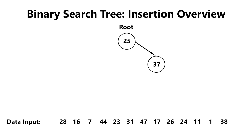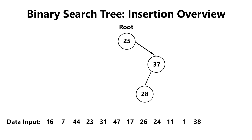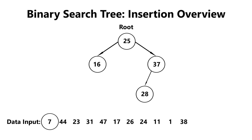In this case, we insert right since 37 is greater than 25. Now let's insert 28. 28 is greater than 25, so we move right. 28 is less than 37, so it gets inserted as the left child of 37. Moving on, let's insert 16. 16 is less than 25, so it gets inserted as the left child of 25.